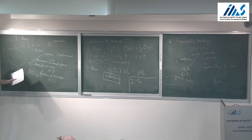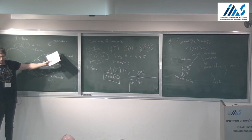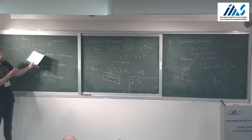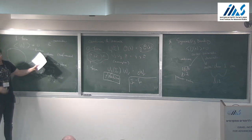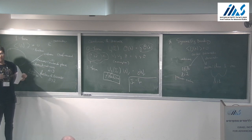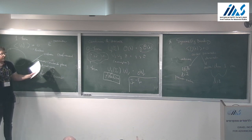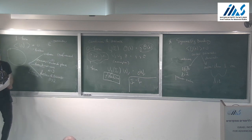In the Higgs mechanism, the monopoles are confined, meaning there is an unbroken one-form symmetry associated to 't Hooft loops. In some examples the one-form symmetry acts on 't Hooft loops, in others on Wilson loops. The Higgs mechanism is an example of an unbroken one-form symmetry acting on 't Hooft loops.